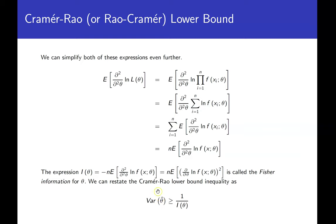We can now restate the Cramér-Rao lower bound as: Var(θ̂) ≥ 1/I(θ), where I(θ) is the Fisher information. It's this Fisher information we need to compute.